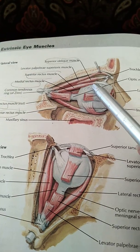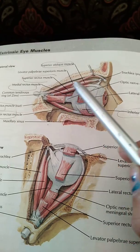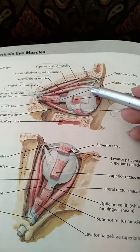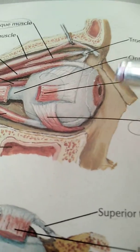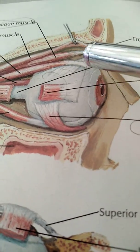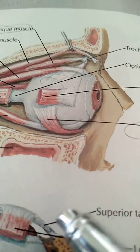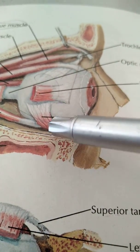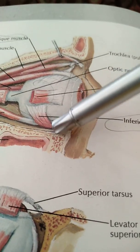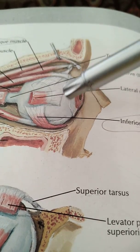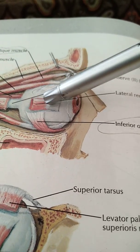The superior oblique muscle originates not from the tendinous ring but from the posterior surface of the orbital cavity, and is inserted to the superior surface of the eyeball, deep to or beneath the superior rectus muscle.